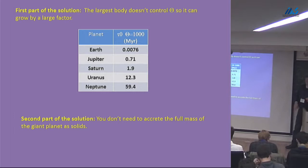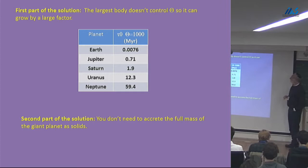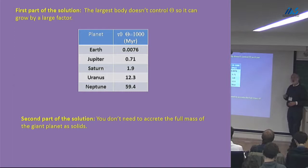If you take theta equal to 1,000, then things become at least more reasonable. You can make Jupiter in a few hundred thousand years, and even Neptune can be made in tens of millions of years. That looks a lot better — that's the first part of the solution. The second part is that you don't accrete the whole planet as particles; you draw in gas from the outside as well. There are two processes. All you need to do is really build up the core, and then if you could add the gas, you would save a lot of time.